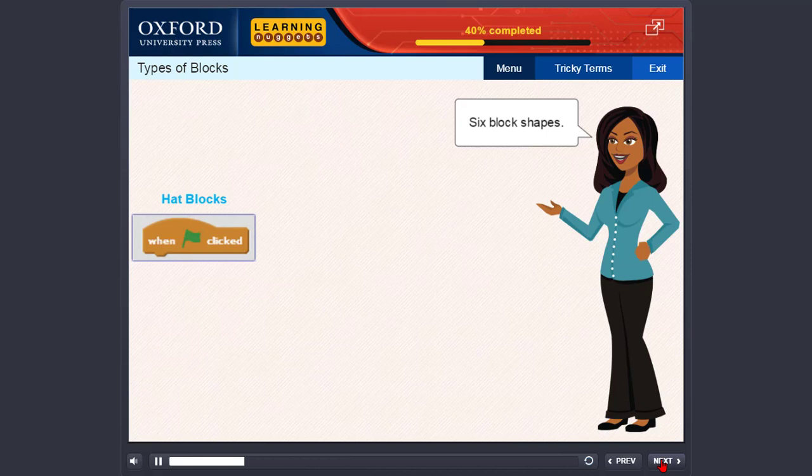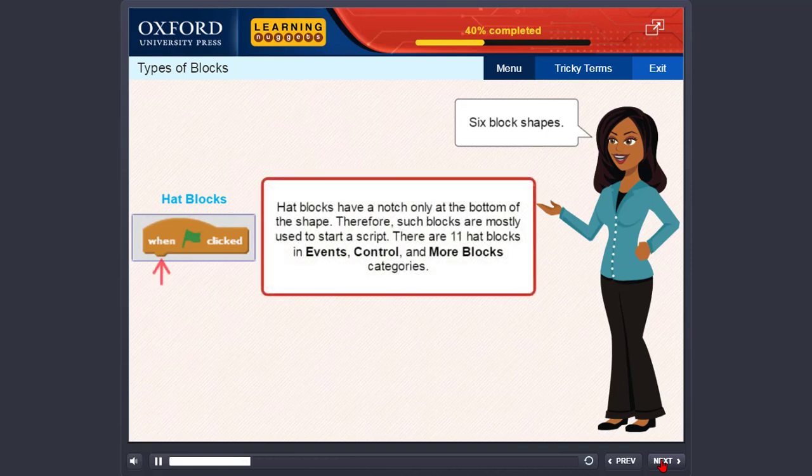Hat blocks. Hat blocks have a notch only at the bottom of the shape. Therefore, such blocks are mostly used to start a script. There are 11 hat blocks in events, control, and more blocks categories.